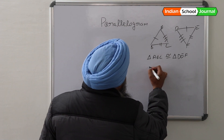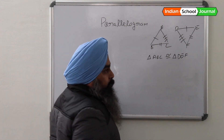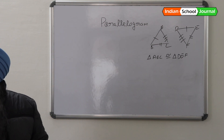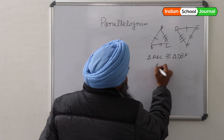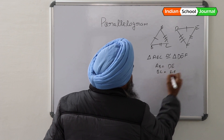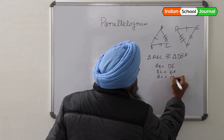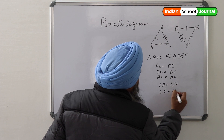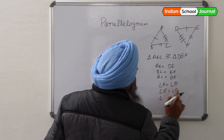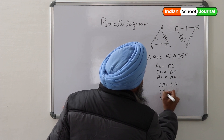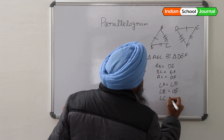If two triangles are congruent, they have three sides and three angles equal. In this case: AB is equal to DE, BC is equal to EF, and CA is equal to FD. Angle A is equivalent to angle D, angle B is equal to angle E, and angle C is equivalent to angle F.